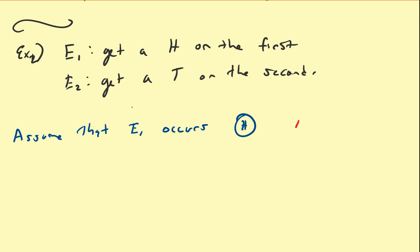And we can switch the order. We can start with E2 and, of course, see that E1 can happen simultaneously as well. So that means E1 and E2 are not mutually exclusive.